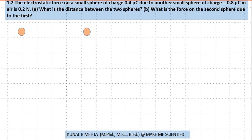We are given two spheres. This is sphere 1 and this is sphere 2. Sphere 1 has charge +0.4 microcoulombs, that is 10^-6 coulomb, and the other sphere has charge -0.8 × 10^-6 coulomb.